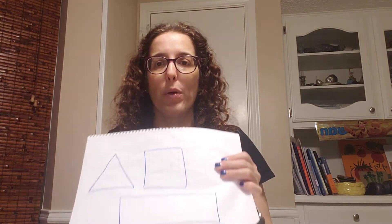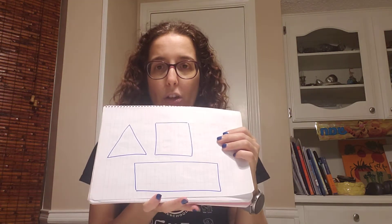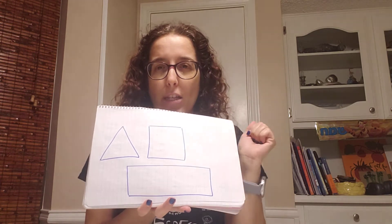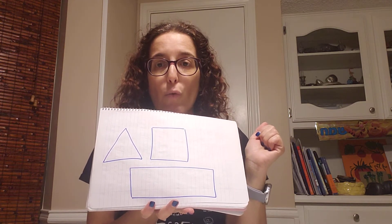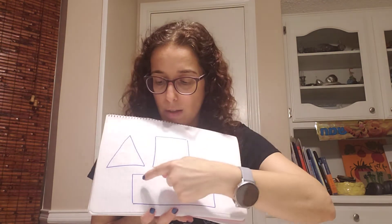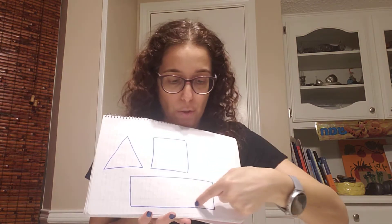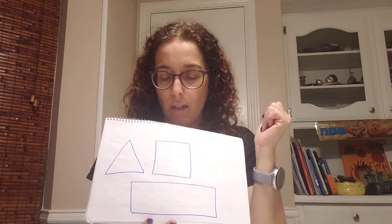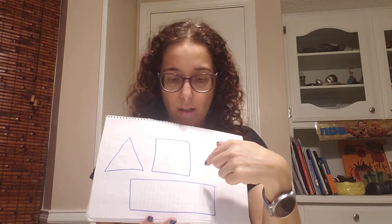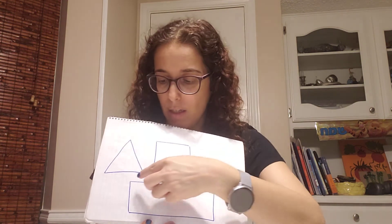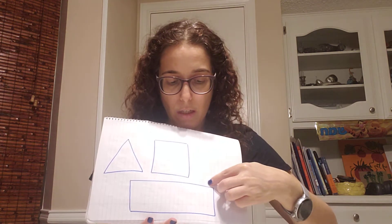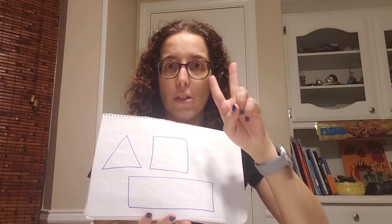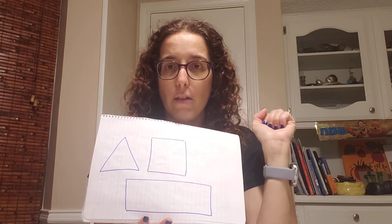Now the third shape we're going to talk about is a rectangle. Like a square, it also has four sides — one, two, three, four. But the sides have different sizes; this one is longer than that one, so it has two different lengths.